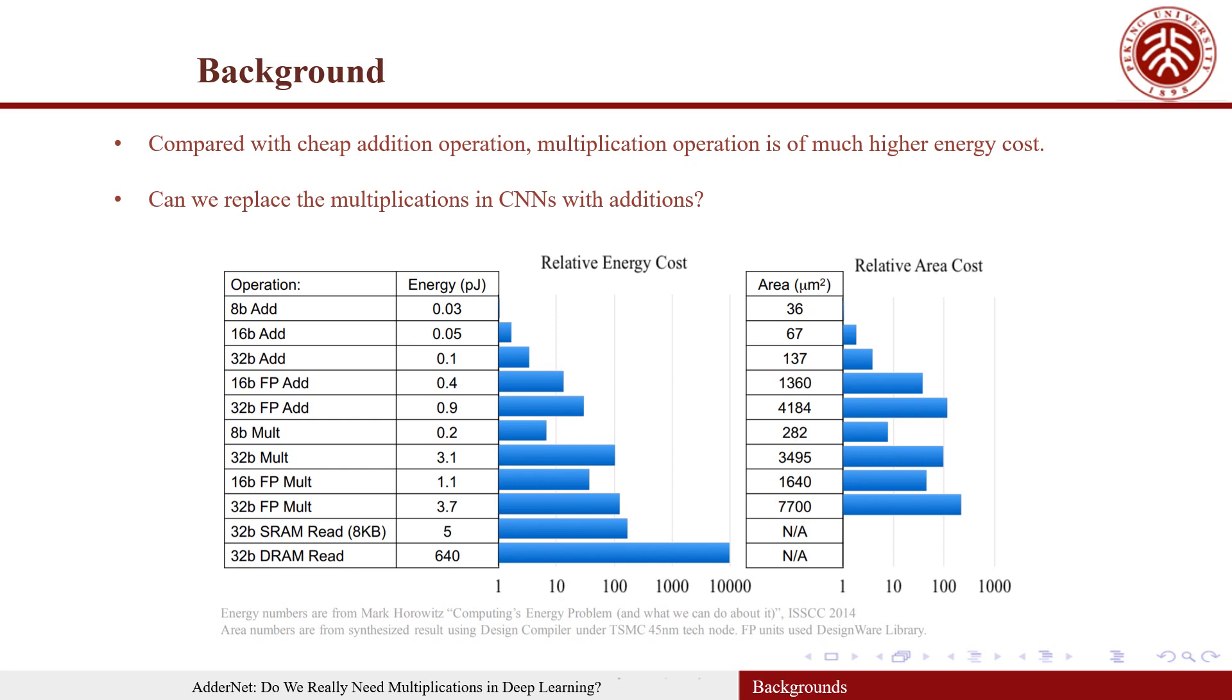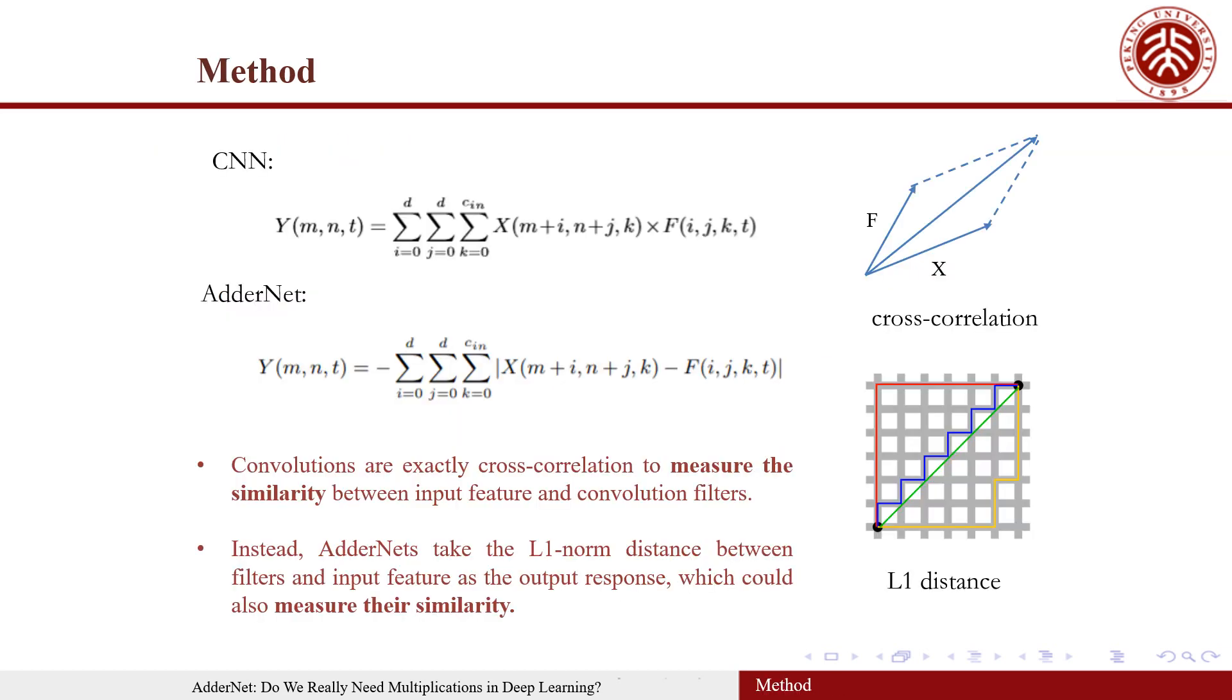This makes us raise a question: can we replace the multiplications in CNNs with additions? In fact, convolutions are exactly cross-correlations to measure the similarity between input feature and convolution filters.